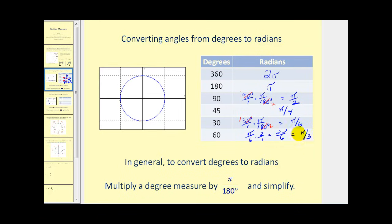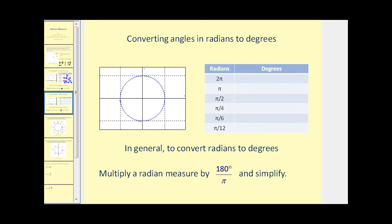If we're ever unsure of a conversion, we can always multiply by pi over 180 degrees. Now let's convert from radians to degrees. Note that often when an angle is given in radians, the units are not written — it is assumed they're radians. Two pi radians is equal to 360 degrees. Half of two pi is pi, so half of 360 would be 180 degrees.